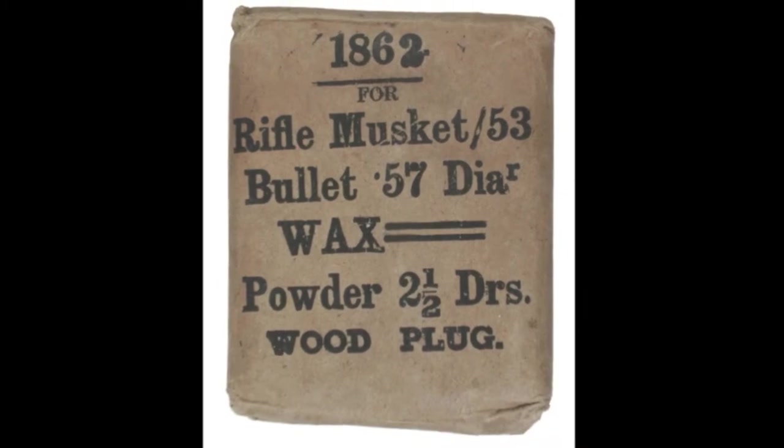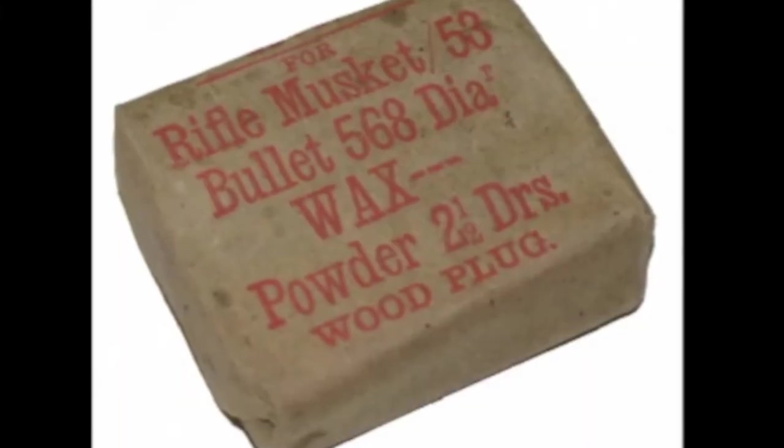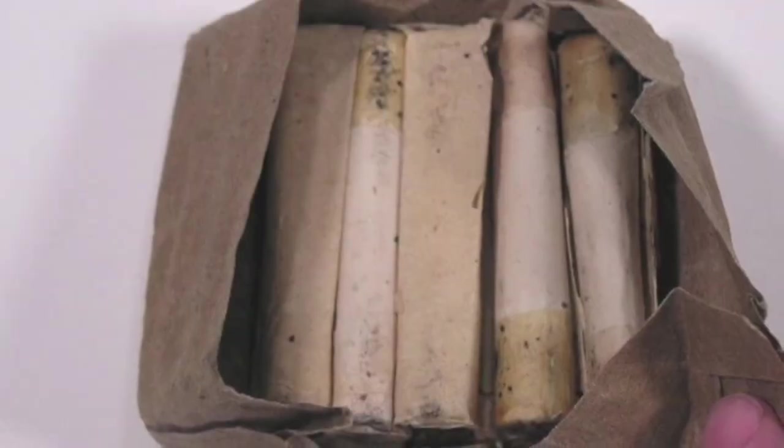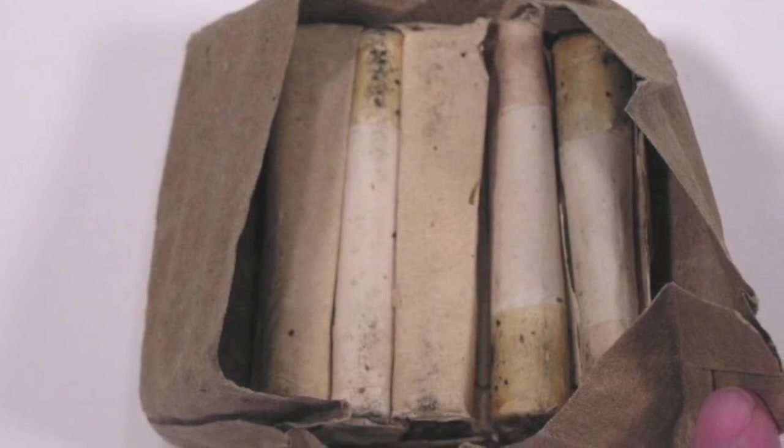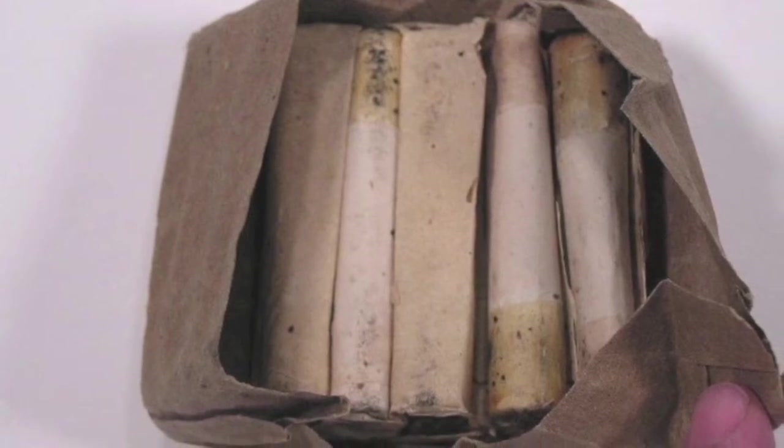The cartridges for the Enfield Rifle Musket were packed 10 at a time inside a sturdy brown paper wrapper. There was further packaging inside the packet consisting of a strip of paper meant to separate the individual cartridges.